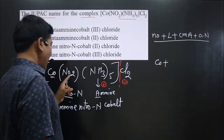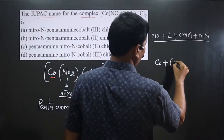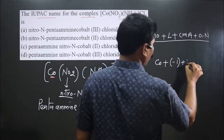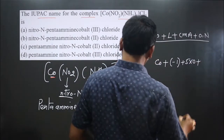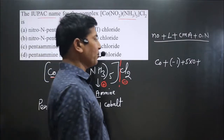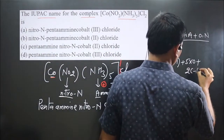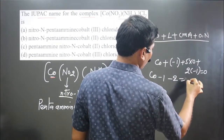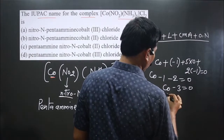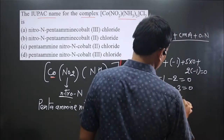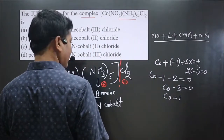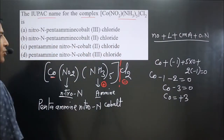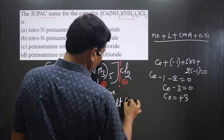Ammonia is a neutral ligand, so five multiplied by zero. There are two Cl atoms, each with a minus one charge, so two times minus one. The total equals zero. Simplifying: cobalt minus one minus two equals zero, so cobalt minus three equals zero, therefore cobalt equals plus three. Cobalt is in plus three oxidation state, which we write as Roman numeral III.